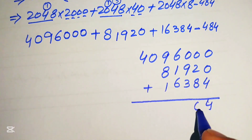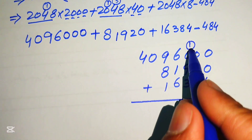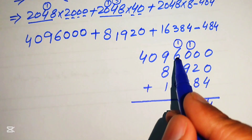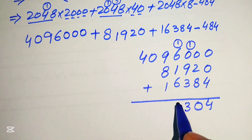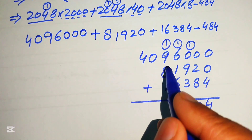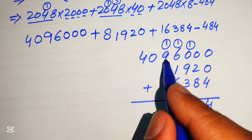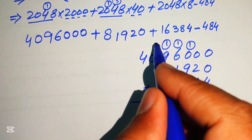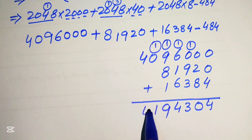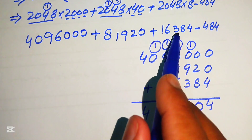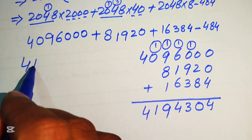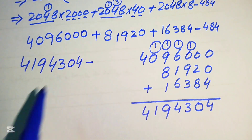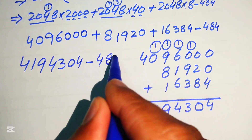Using traditional addition, we add 4,096,000 plus 81,920 plus 16,384: 4 plus 0 is 4; 8 plus 2 is 10, write 0 carry 1; 9 plus 1 plus 3 is 13, write 3 carry 1; 6 plus 6 plus 1 is 14, write 4 carry 1; 9 plus 9 plus 1 is 19, write 9 carry 1; 1 plus 0 plus 4 is... giving 4,194,304. Then we subtract 484.